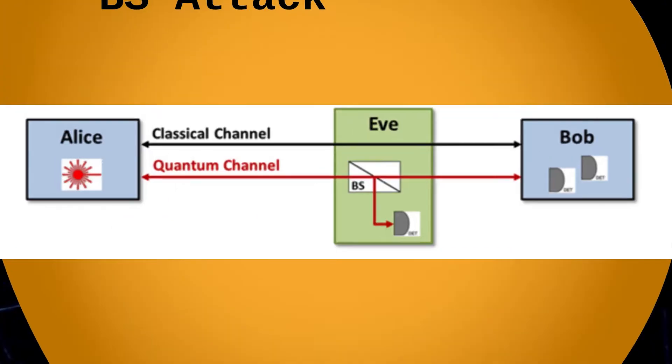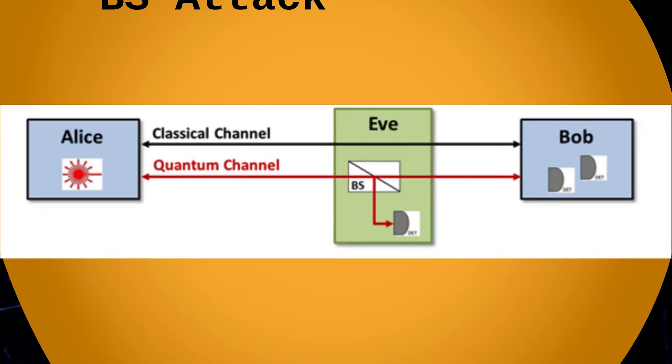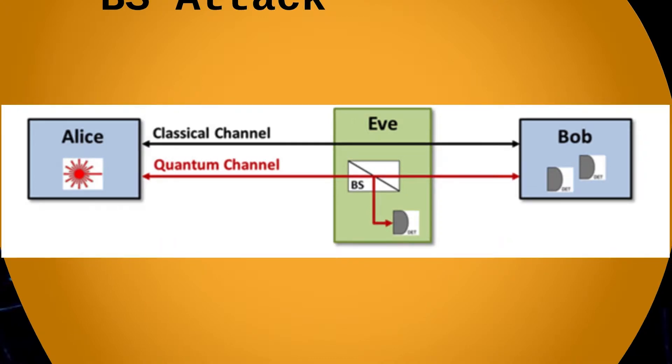For the BS attack, Eve introduces a low loss beam splitter in the quantum path. In this case, Eve is able to gain a limited amount of information during Alice and Bob's key exchange.